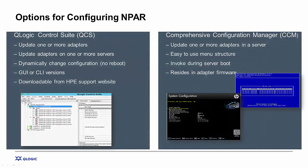To enable N-PAR functionality and manage these adapters, there are two methods. First, you can use the Qlogic Control Suite (QCS) utility from Qlogic. Or you can use the Comprehensive Configuration Management (CCM) utility that's part of the adapter BIOS, enabled during the server boot process. Both QCS and the adapter firmware can be downloaded from HPE's support website, and both utilities can perform all management functions for these HPE Flexible Network Adapters from Qlogic.